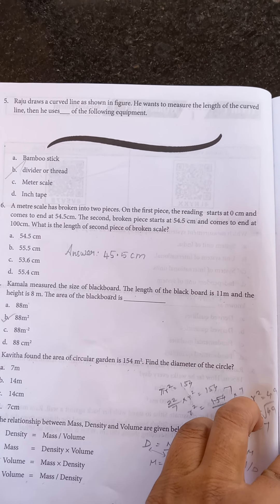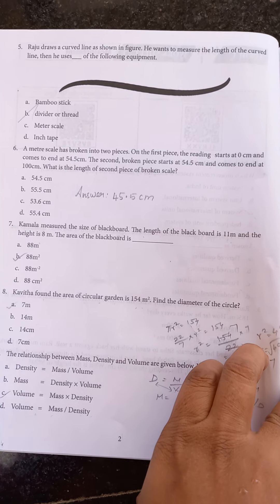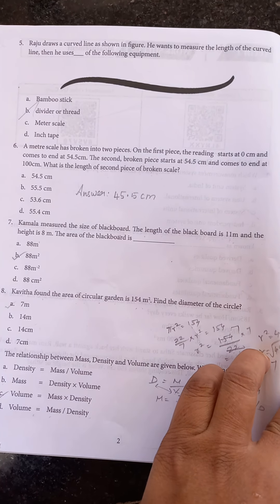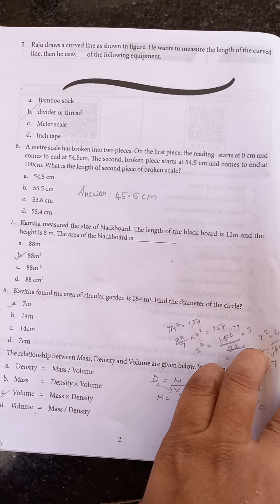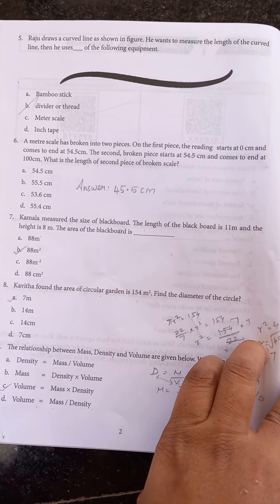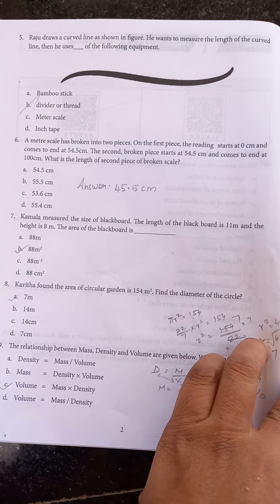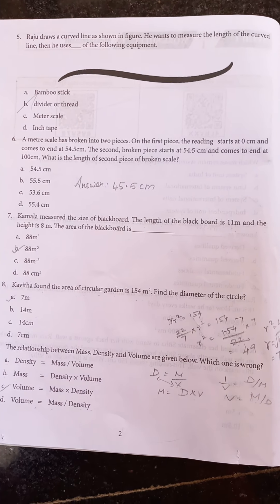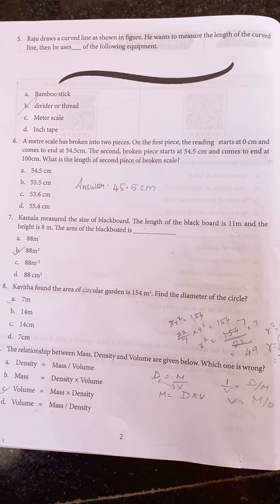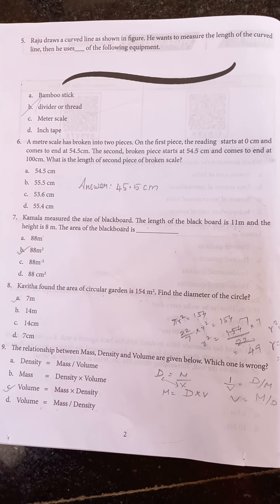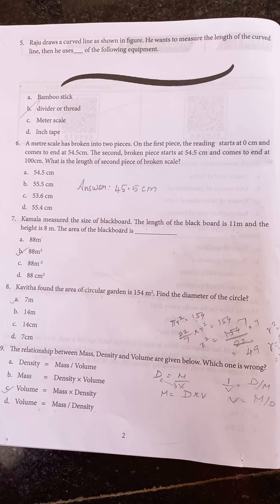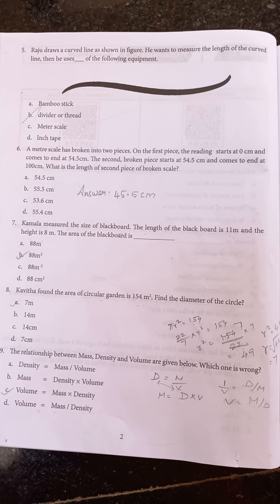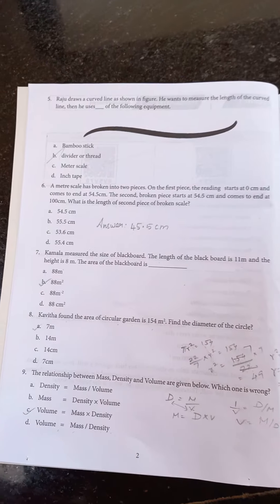A meter scale has broken into two pieces. On the first piece the reading starts at 0 centimeters and comes to end at 54.5 centimeters. The second broken piece starts at 54.5 centimeters and comes to end at 100 centimeters. What is the length of the second piece of broken scale? It is 55.5 centimeters.